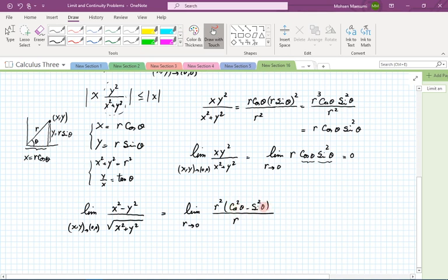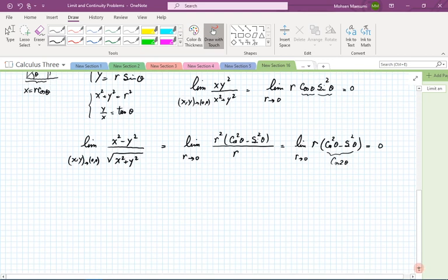R going to 0. The angular portion again is unspecified, but it is limited by the fact that sine and cosine are between 1 and -1. So this quantity is always limited between 1 and -1. So I can write this as a limit of r times (cosine^2 θ - sine^2 θ). You might remember from your trigonometry that this is the same as cosine of 2θ, but it's not essential. This quantity is limited. So the limit of r going to 0, the limit is still 0. So many problems of this nature are given in this section.